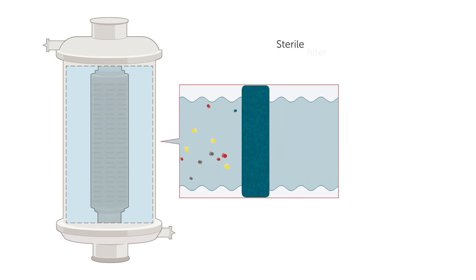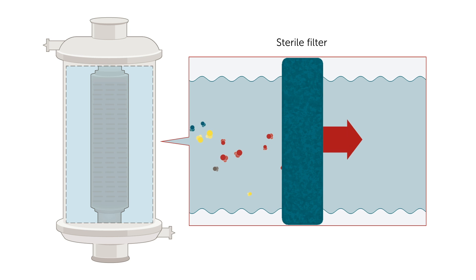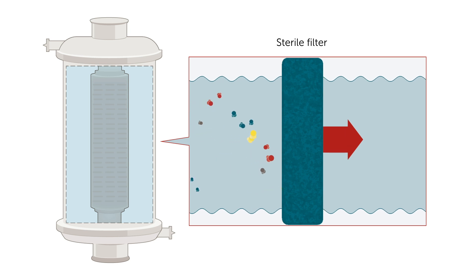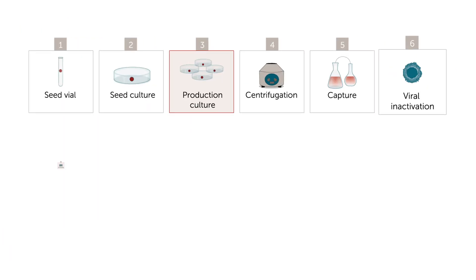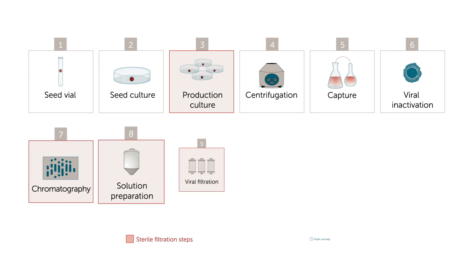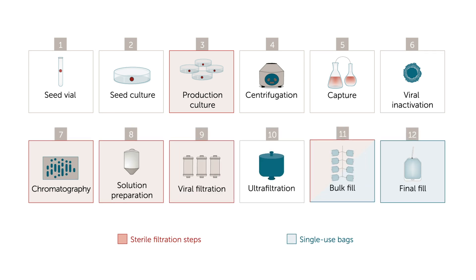Sterile filtration is the process of removing microorganisms from a fluid stream without adversely affecting its composition. For high-purity bioprocessing workflows, the combination of single-use bags and sterile filtration delivers pure products with reliable yield.